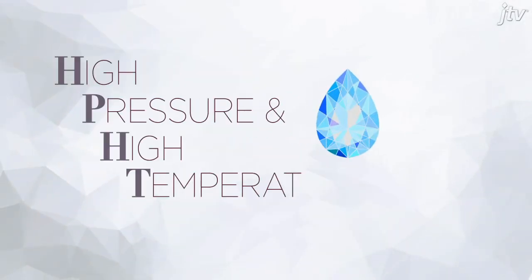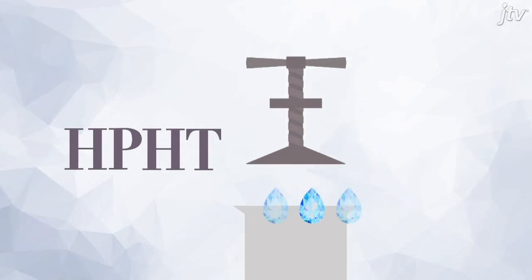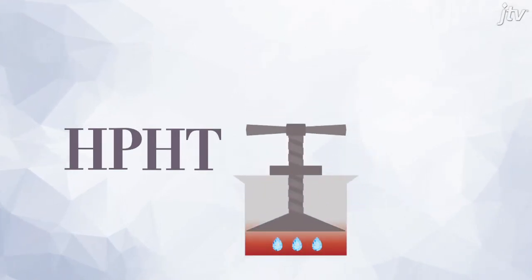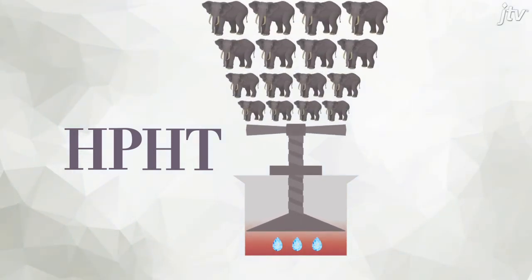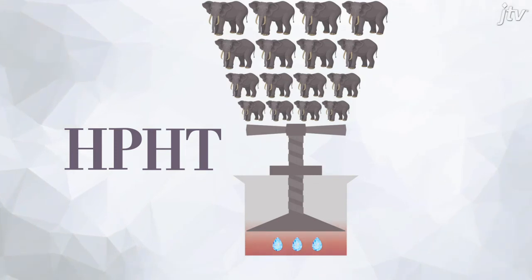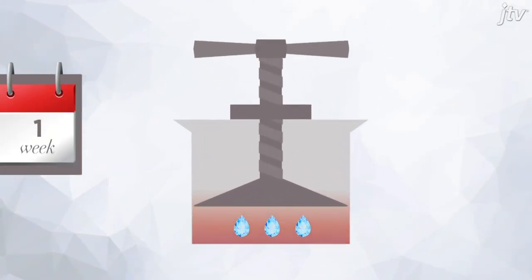Another process, known as HPHT, subjects the diamond seeds to immense volumes of high pressure and high temperatures. To get an idea of this process, try to envision the pressures exerted by 4,500 elephants standing on your head, plus temperatures hotter than molten lava.